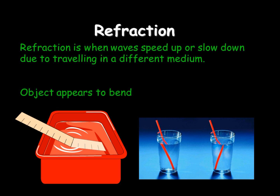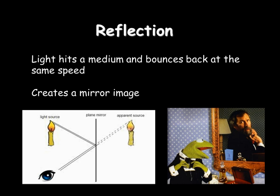Something else that can happen is called reflection — that's when light hits a medium and bounces back at exactly the same angle. Mirrors do this, and we call flat mirrors plain mirrors. Mirrors that are bent — convex or concave — will alter the light slightly, making it appear larger or smaller depending on which way the mirror is bent. You can see with this diagram that the light from a candle bounces back to the eye in exactly the same way.